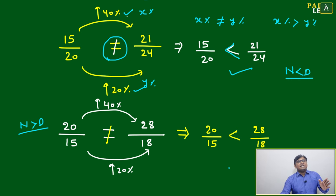Numerator changed by 40 percent, denominator changed by 20 percent. Both will not be equal, that's for sure. Now which one will be less? This one will be less. This is 40, this is 20. This ratio will be less.